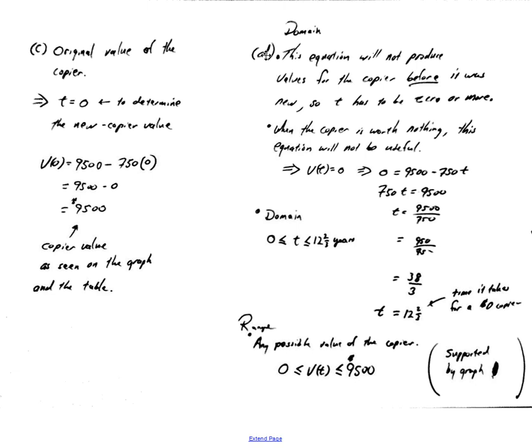And finally, the domain. The domain is essentially, I'm just thinking, what kind of time should I put into this function? In other words, what could the possible values of time be? Could time be negative? Could time be 5000? How many years should I be using this equation to determine the value of the copier? The first thing I notice is this equation will not produce values for the copier before it was new. In other words, t has to be 0 or larger. T cannot be negative because that would give me the value of the copier before it was new, and that doesn't make any sense. So I restrict the domain to only t values that are 0 or bigger.